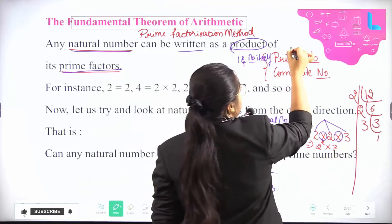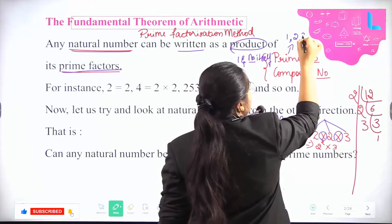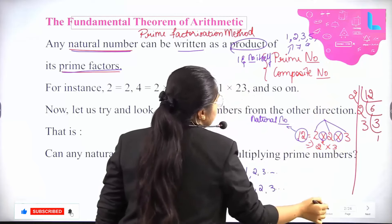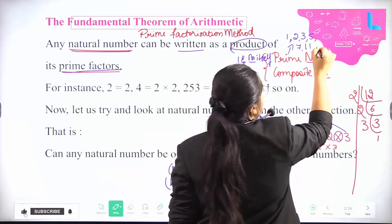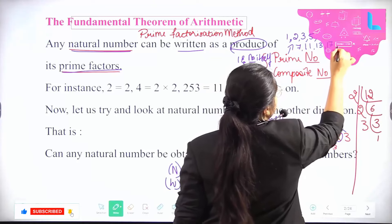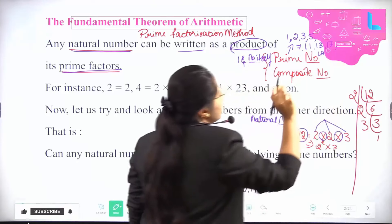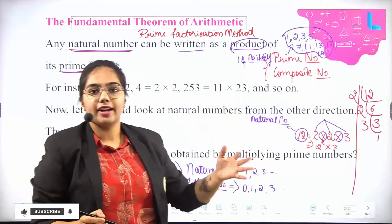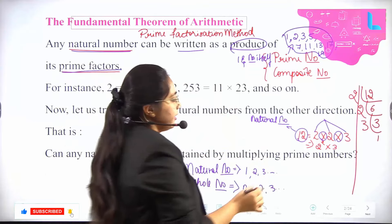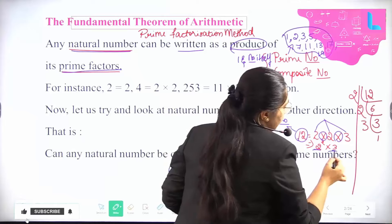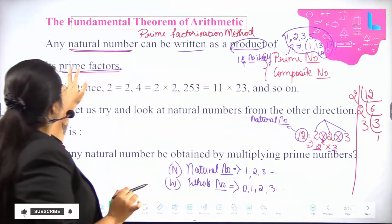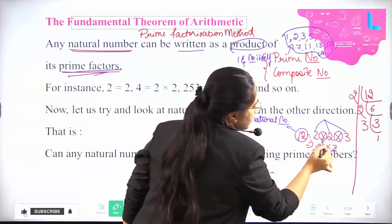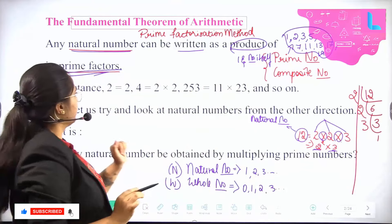What are the prime numbers? For example: 1, 2, 3, 5, 7, 11, 13, 17, 19. Both 2 and 3 are prime numbers. Any natural number can be written as a product of prime factors. These are the products: 2 × 2 × 3 — these are prime factors only.